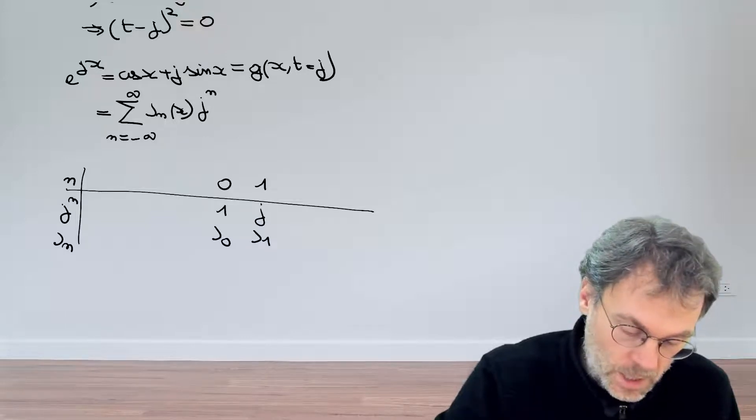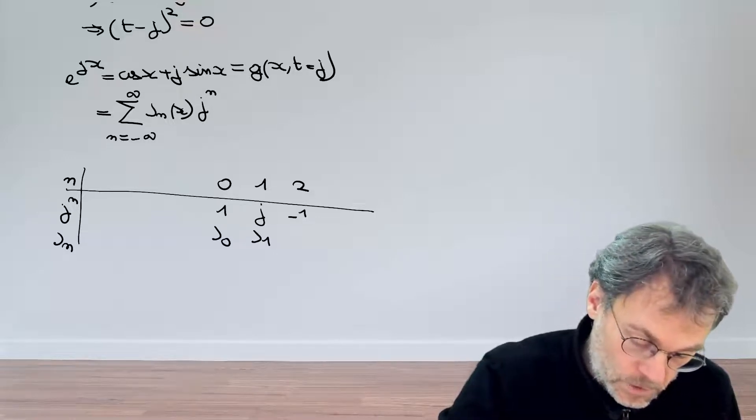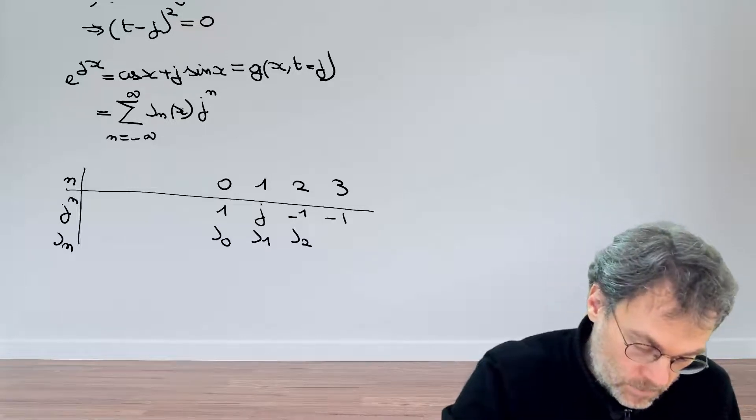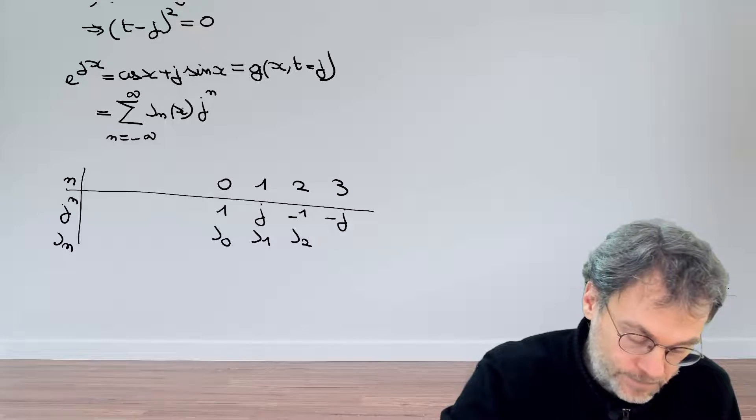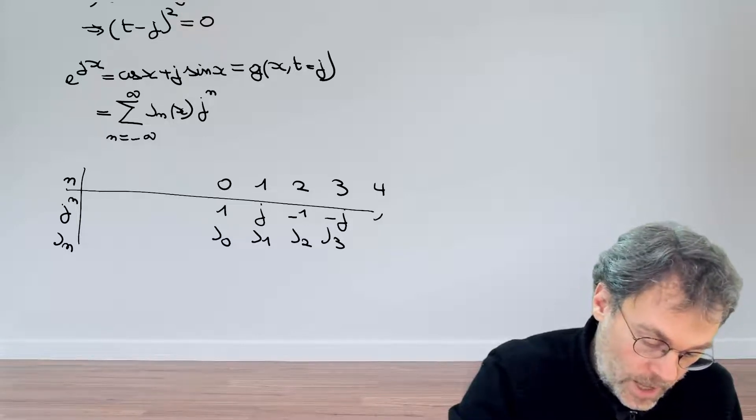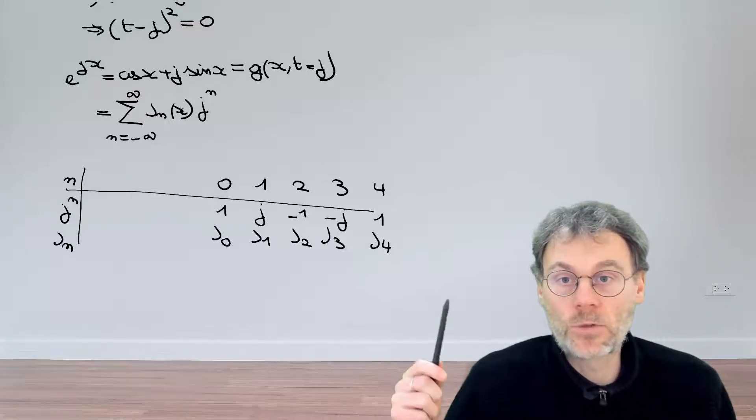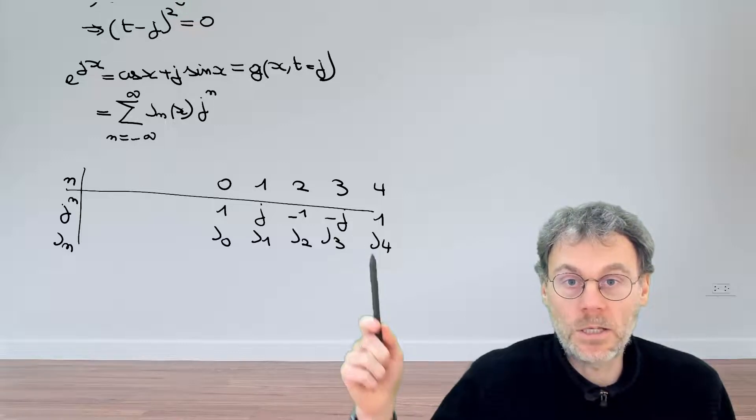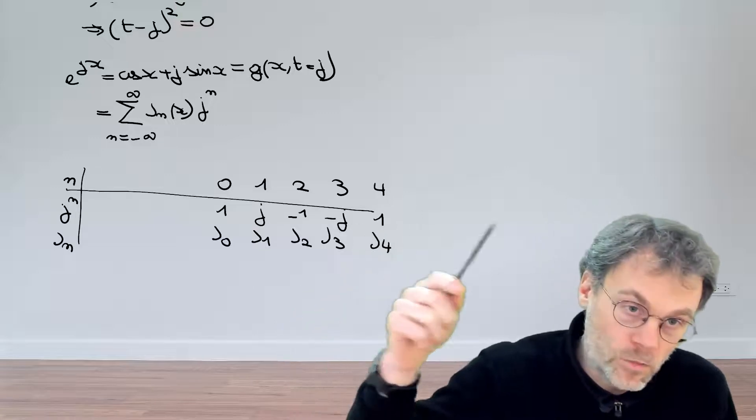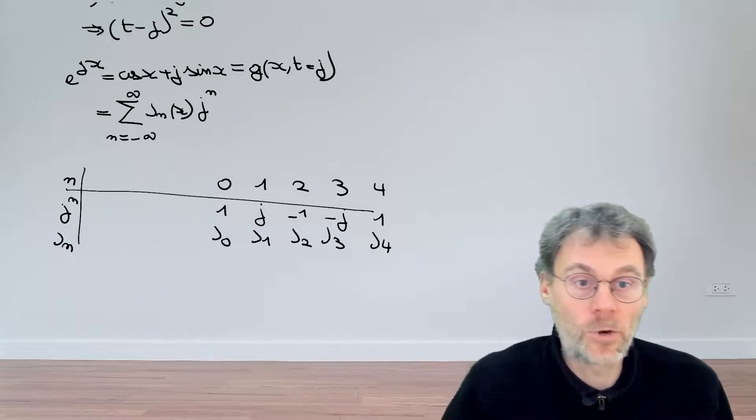For n equal to 1, we get j and J_1. For n equal to 2, we get j squared, that's minus 1, J_2. For n equal to 3, we get multiplying by j is minus j, J_3. And then for 4, we finally have 1 back and then J_4. So you see when it comes to powers of j, these patterns repeat themselves. We have the pattern 1, j, minus 1, minus j repeating itself. This pattern will also repeat itself for negative powers of j, obviously.